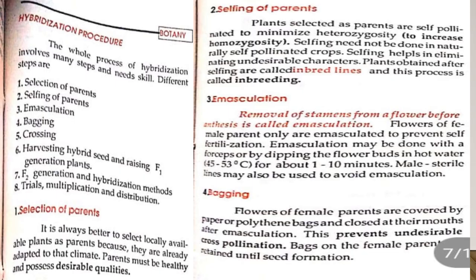Hybridization procedure: the whole process of hybridization involves many steps and needs skill. The different steps are: selection of parents, selfing of parents, emasculation, bagging, crossing, harvesting hybridized seeds, raising F1 generation plants, F2 generation, hybridization methods, trials, and multiplication and distribution. Selection of parents: it is always better to select locally available plants as parents because they are already adapted to that climate.